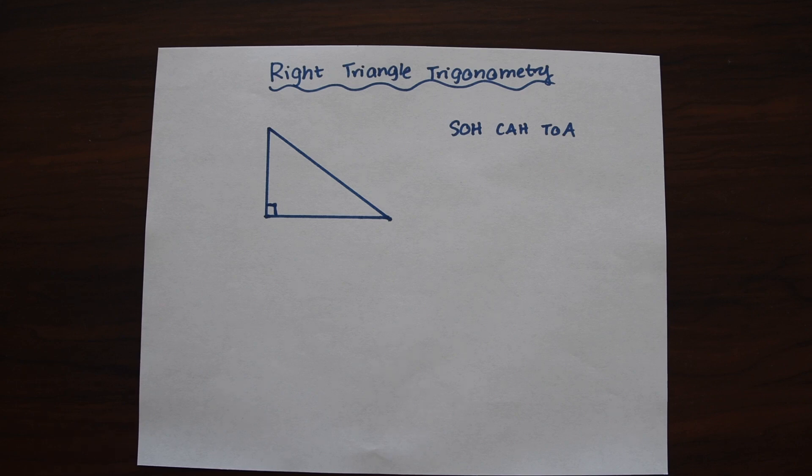So today we're going to be going over right triangle trigonometry, otherwise known as trigonometric ratios, otherwise known as SOHCAHTOA.